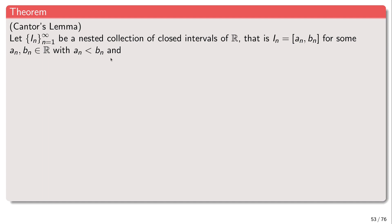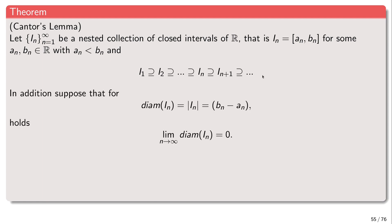Nested means the intervals are all contained in each other, so the first interval is the biggest, it contains the second, and so on — we have this chain of nested intervals. In addition, we assume that the diameter of each interval, also denoted by the absolute value of the interval, is just the length of the interval — the distance between its two endpoints.